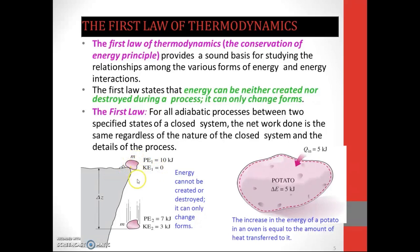When the rock is dropped down, at state number two the potential energy is decreasing — decreasing from 10 to 7 kilojoules — and we have started to have a kinetic energy value of 3 kilojoules because the rock is in motion.